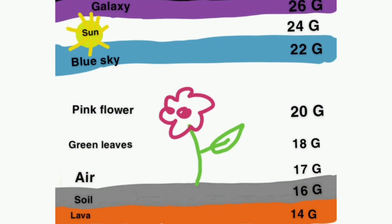Look at this picture and start from the bottom. We have hot burning orange lava under the soil, depicting the orange cannula gauge 14. Above that is gray colored soil for the gray cannula of 16 gauge, then white for 17 gauge, green leaves for 18 gauge, a pink flower for 20 gauge, blue sky for 22 gauge, a yellow sun for 24 gauge, and above all a purple galaxy representing the 26 gauge cannula.